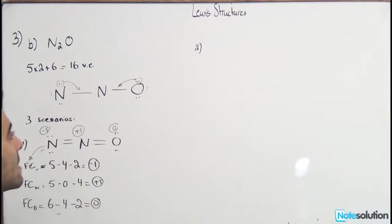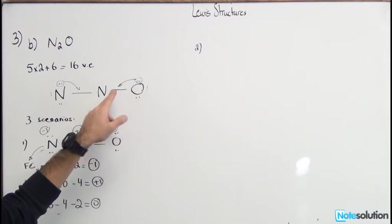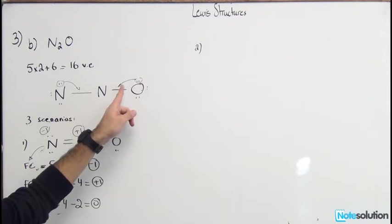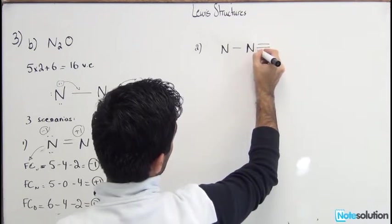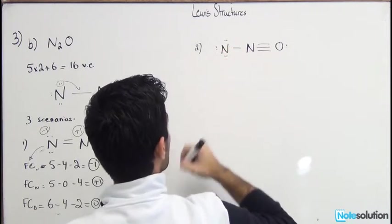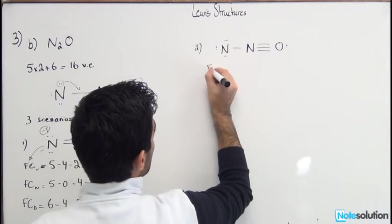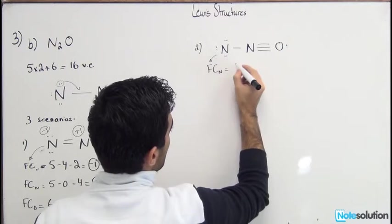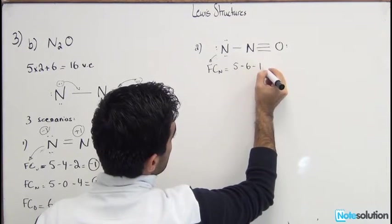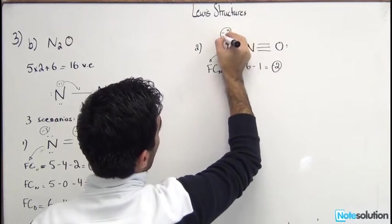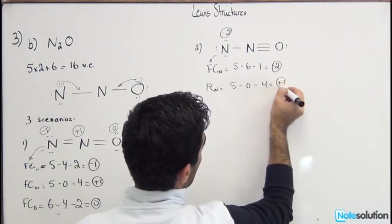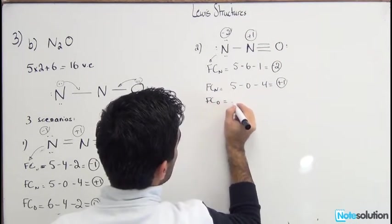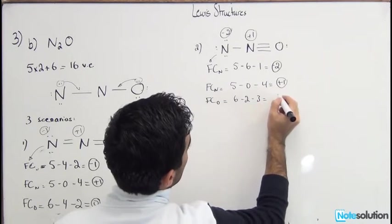Scenario two: the central N takes two double bonds from the O side, forming a triple bond with O and a single bond with the terminal N. FC of N₁ = 5 − 6 − 1 = −2. FC of N₂ = 5 − 0 − 4 = +1. FC of O = 6 − 2 − 3 = +1. Formal charges are −2, +1, +1 — very large.